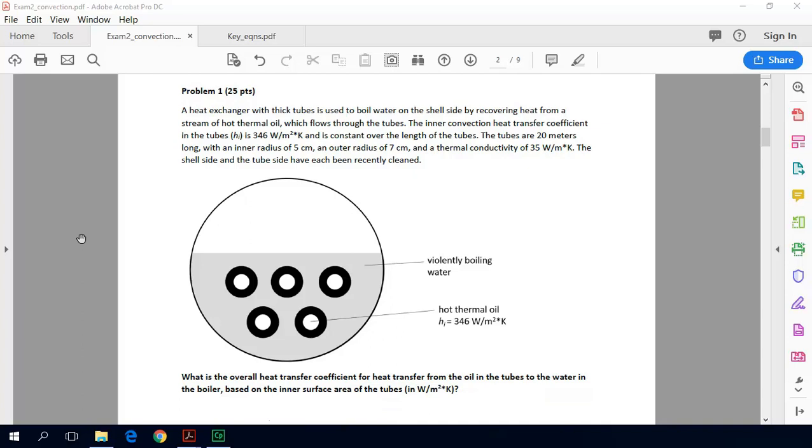I'll go ahead and read the problem statement. A heat exchanger with thick tubes is used to boil water on the shell side by recovering heat from a stream of hot thermal oil which flows through the tubes. We're given the inner convection heat transfer coefficient of h_i equals 346 watts per meter squared Kelvin which stays constant down the whole length of the tubes. The tubes are each 20 meters long and have an inner radius of 5 centimeters and an outer radius of 7 centimeters.